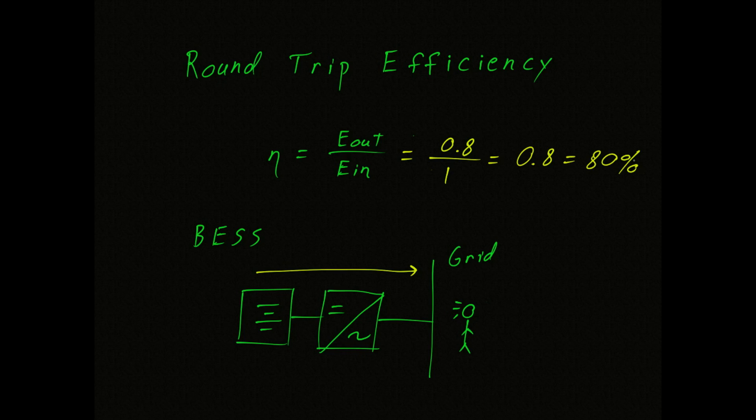So you might ask, where did that extra 0.2 units of energy go? Well, there's this pesky thing called the law of thermodynamics. And it turns out that no energy conversion is 100% efficient. You heard that right, no energy conversion is 100% efficient.